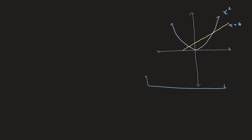Just to recall, linear means that it is a line, and so x plus 6 is the line but x squared is not. When we're solving simultaneous equations, we want to find the point where the values of x and y in both equations are equal to each other — in other words, we want to find the point of intersection between these two curves or lines.